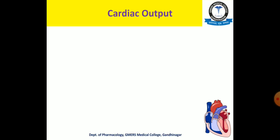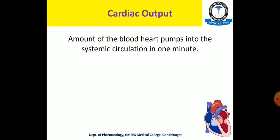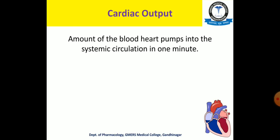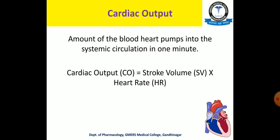Now, what is cardiac output? Cardiac output is the amount of blood pumped out from the heart — from the left ventricle — into the systemic circulation in one minute. Going back to stroke volume: it is the same blood pumped from the left ventricle per stroke, whereas cardiac output is per minute. Since the average heart rate is 72 beats per minute, the heart contracts 72 times per minute. So if we multiply stroke volume by heart rate, we get cardiac output. Cardiac output equals stroke volume multiplied by heart rate.